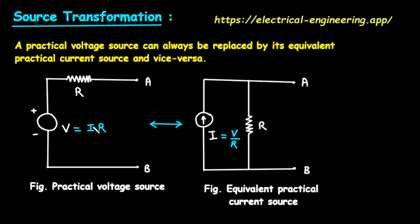Step 2, the value of the current. How do we calculate the current I for our new source? The diagram on the right shows us the formula, I equals V divided by R. To get the value of the new current source, you simply take the voltage V from the original source and divide it by its series resistance R.